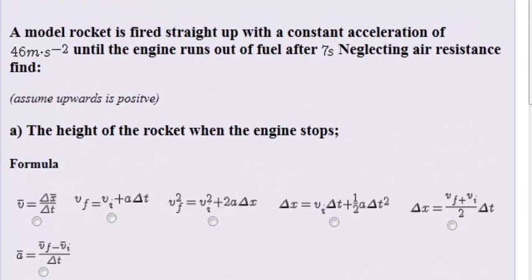In this question we have a model rocket that is fired straight up with a constant acceleration of 46 meters per second squared until the engine runs out of fuel after seven seconds. Neglecting air resistance, find the height of the rocket when the engine stops.